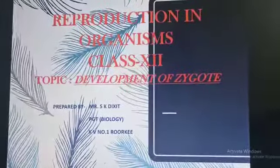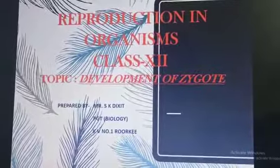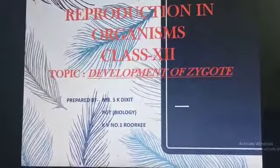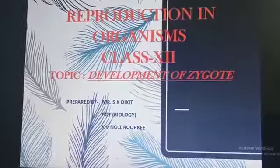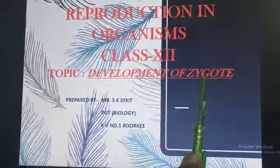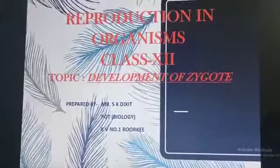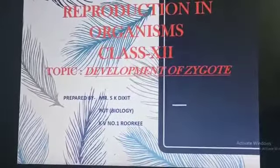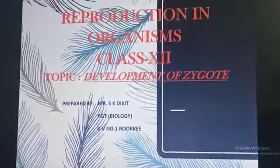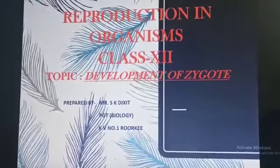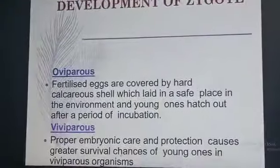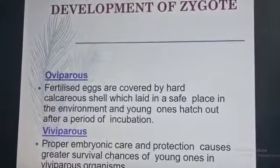When the zygote divides, the unicellular zygote converts into a multicellular embryo. Now, how does the zygote develop?